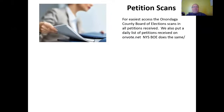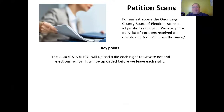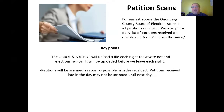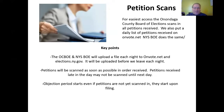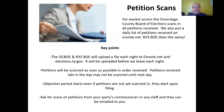Petition scans: for easiest access, the Onondaga County Board of Elections scans in all petitions received. We also put a daily list of petitions received on onvote.net. New York State BOE does the same on their website. The OCBOE and New York State BOE will upload a file each night to onvote.net and elections.ny.gov before we leave each night. Petitions will be scanned as soon as possible in the order received. Petitions received late in the day may not be scanned until the next day. Note: the objection period starts even if petitions are not yet scanned in — they start upon filing. Ask for scans of petitions from your party's commissioner or any staff and they can be emailed to you free of cost.